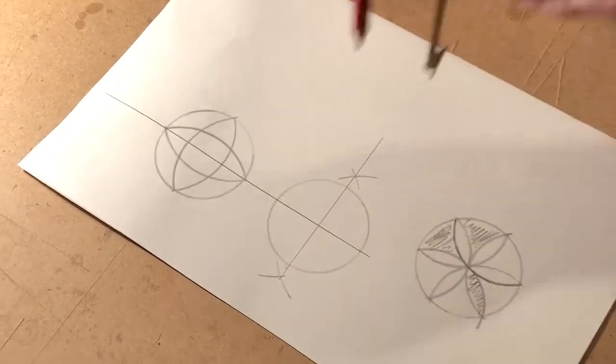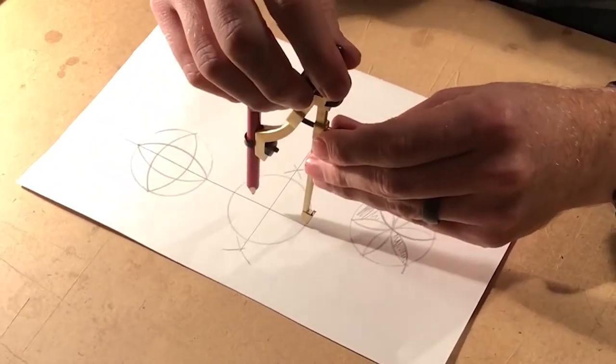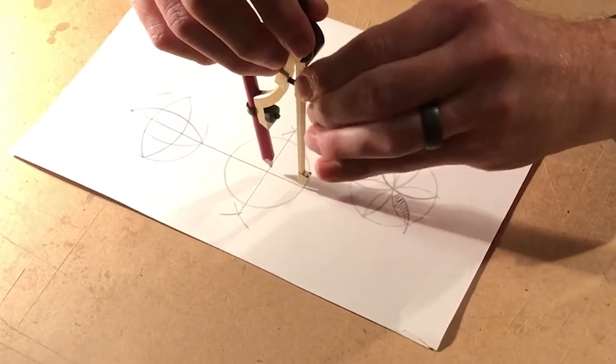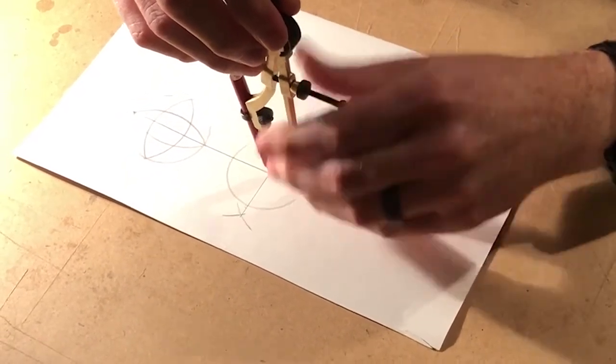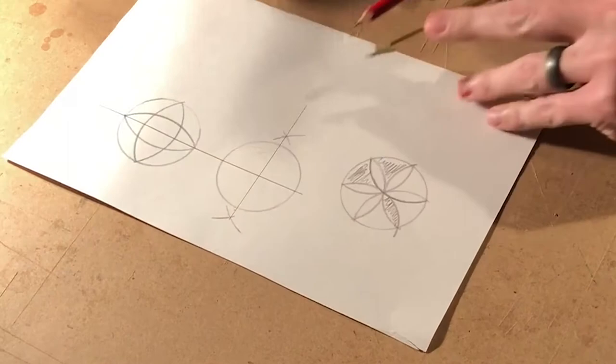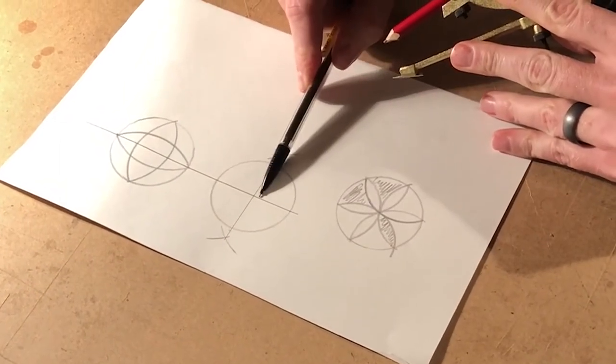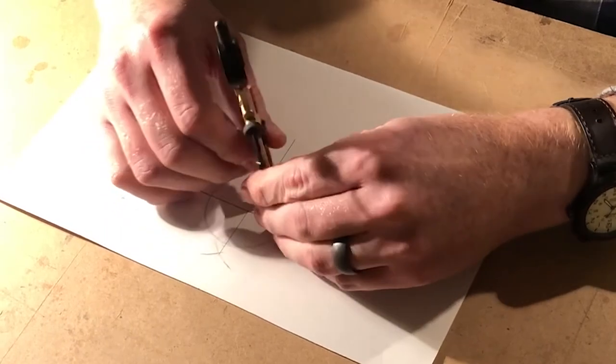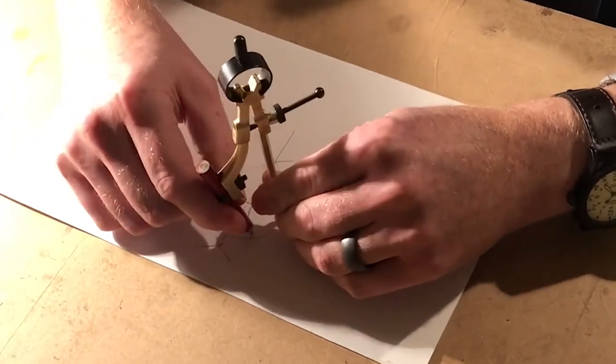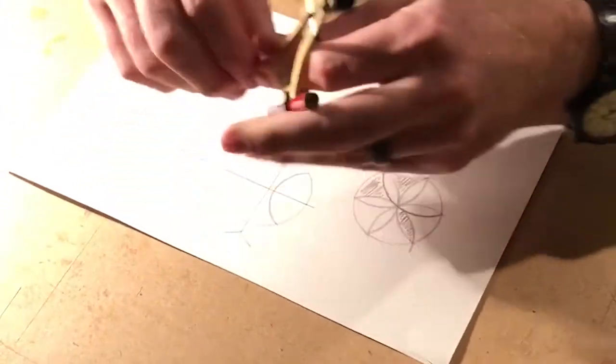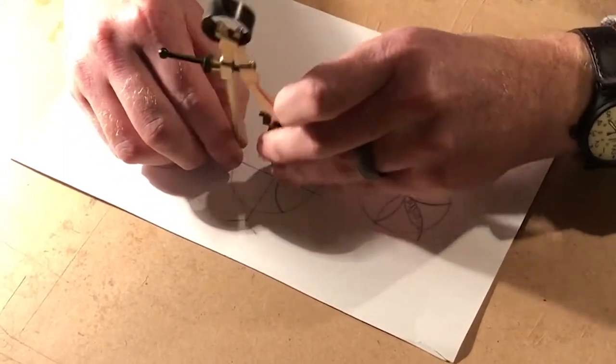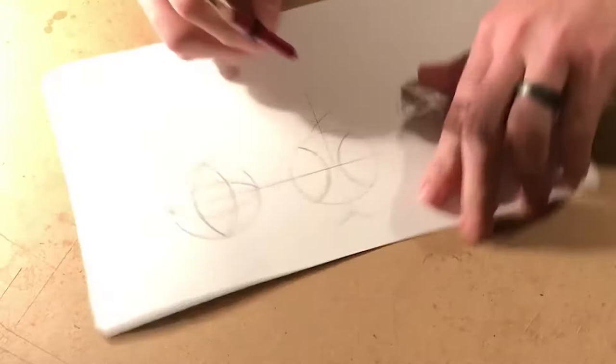I'll show you one more. If you make it smaller, play around with the size—maybe from here to there—you get a common design you'll see in a lot of especially medieval European art, religious art. You go to all four points and make that arc.